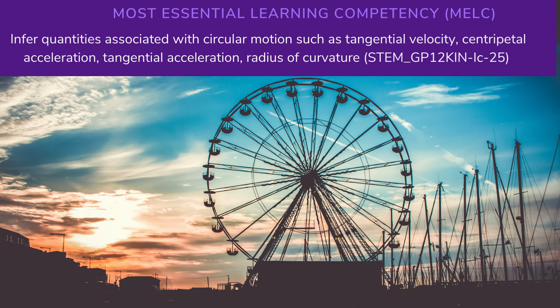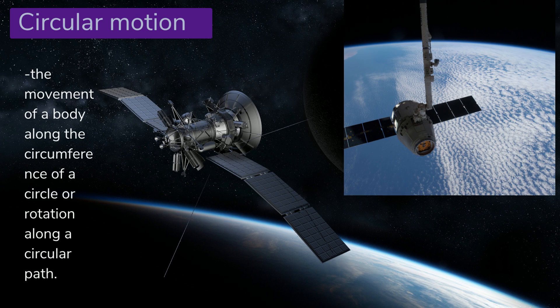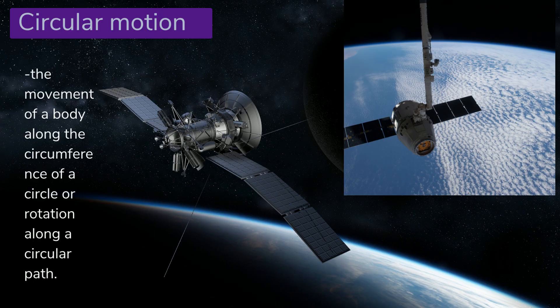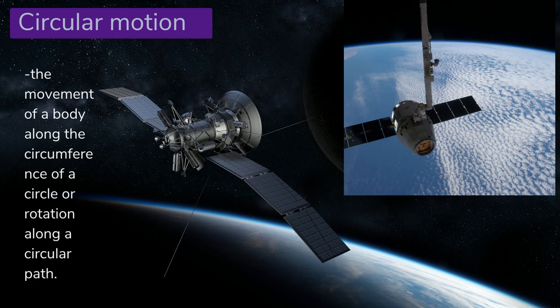Circular motion is the movement of the body along the circumference of a circle or rotation along a circular path. The most common examples of circular motion include: